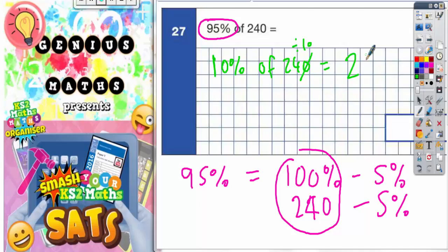So 5% of 240 is going to be half of this 24, because 5% is half of 10%. Half of 24 is 12, so 5% is 12. What we've worked out here is that our 5% is 12.